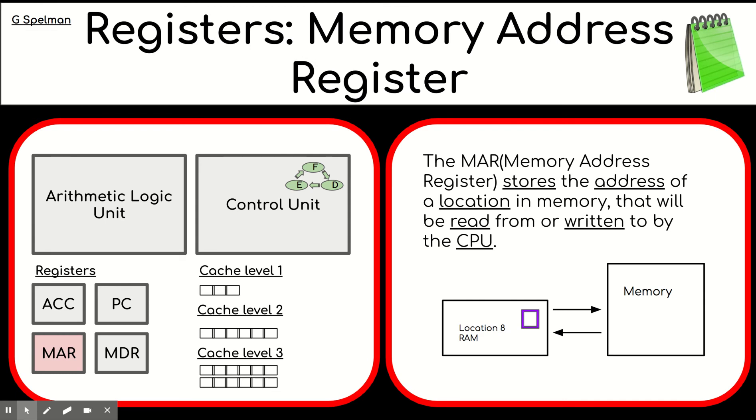Memory address register. So this also contains an address. And sometimes the CPU needs to write something into a location in memory. Sometimes it needs to read something from a location in memory. The memory address register will store the address that is being manipulated by the CPU. So the memory address register stores the address of a location in memory that will be read from or written to by the CPU.